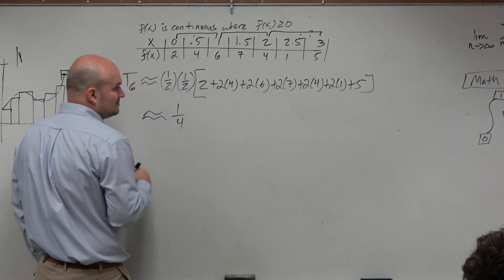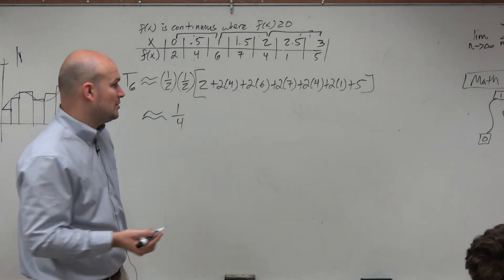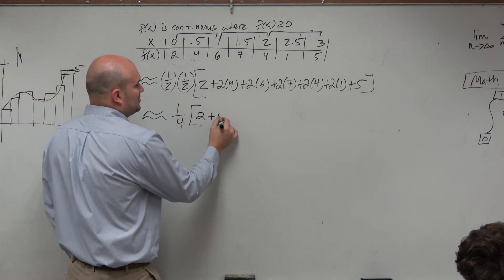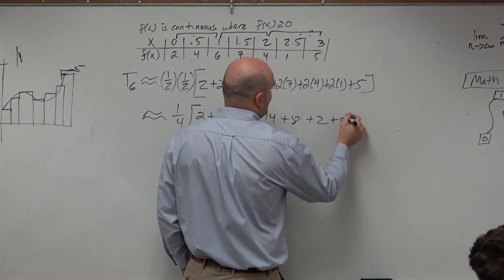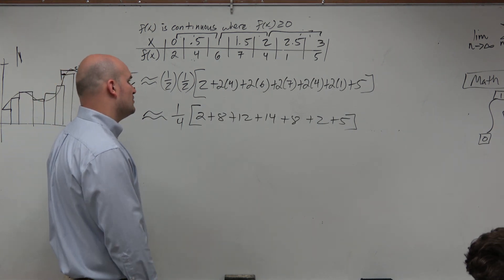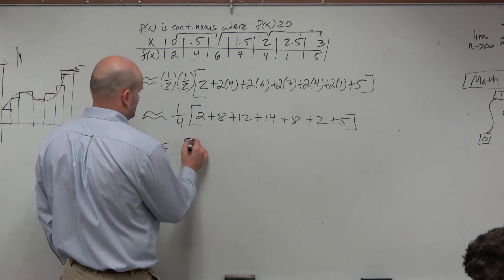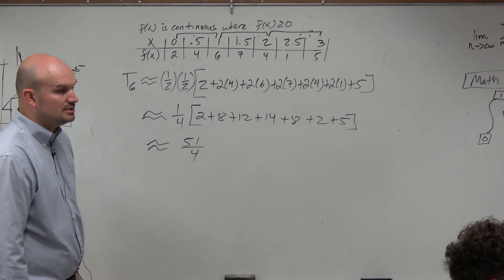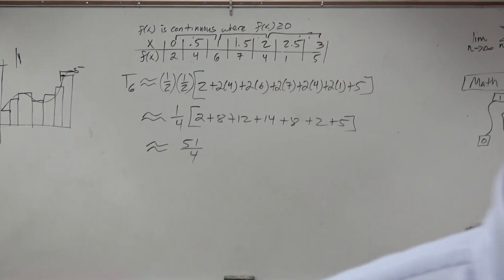So that is showing our method, and technically that would be a fine answer. But if we needed to go a little bit further, let's simplify: 2 plus 8 plus 12 plus 14 plus 8 plus 2 plus 5 gives us 51. So the result is 51 over 4. Check my math — looks good.